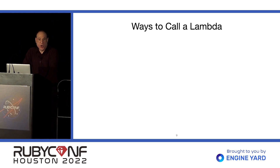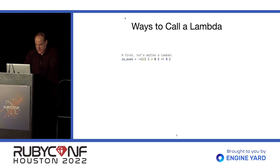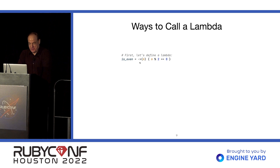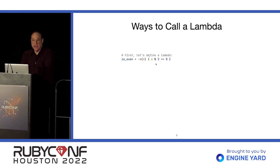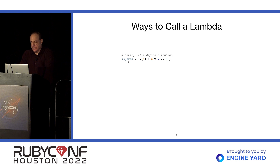Let's look at the ways to call a Lambda. First, let's define one. Here's a Lambda that takes a single parameter and returns whether or not it's a multiple of two — therefore, whether or not it's even. We're assigning it to a local variable called isEven.